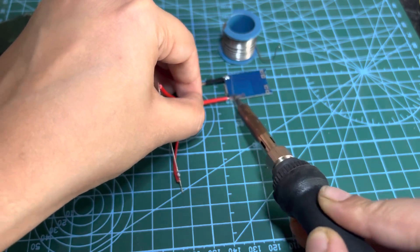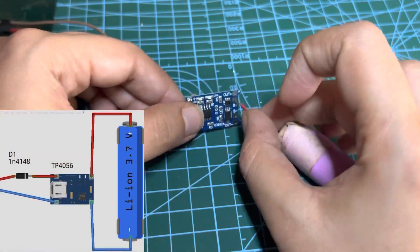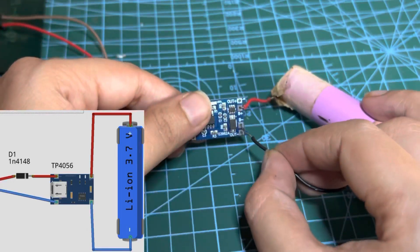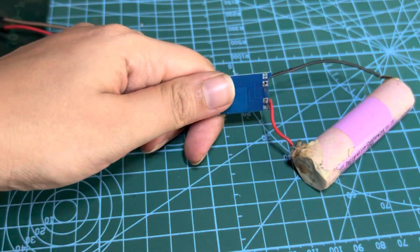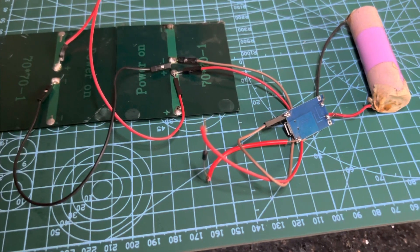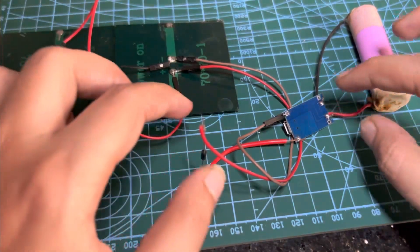This module helps in constant voltage charging. Now connect the positive terminal of the lipo battery to the B+ of the TP4056 charging module and the negative terminal to B-. Now our circuit is completely ready, let's take it out to test it.